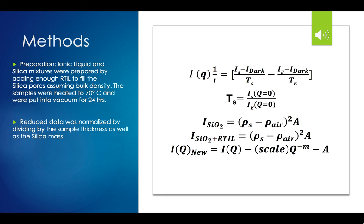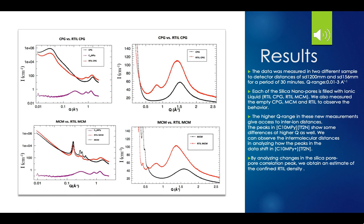Methods. The ionic liquid and silica mixtures were prepared by adding enough RTIL to fill the silica pores assuming bulk density — the density of the ionic liquid itself not being in confinement. The samples were then heated to 70 degrees Celsius and were put into vacuum for 24 hours. The reduced data was normalized by dividing by the sample thickness as well as the silica mass. The data was measured at two different sample-to-detector distances of 156 and 1200 millimeters for a period of 30 minutes. Our Q range was 0.0123 inverse angstroms. Each of the silica nanopores is filled with the ionic liquid — RTIL-CPG and RTIL-MCM — and we also measured the empty CPG, MCM, and RTIL to observe the behavior.